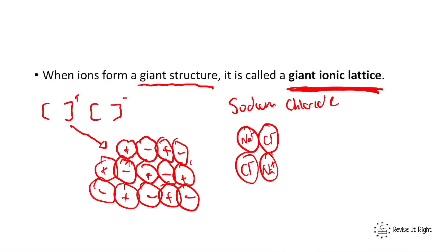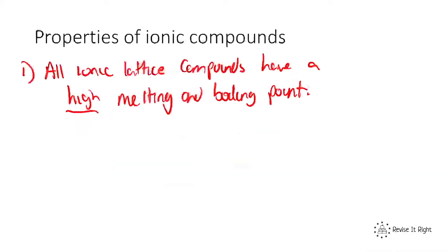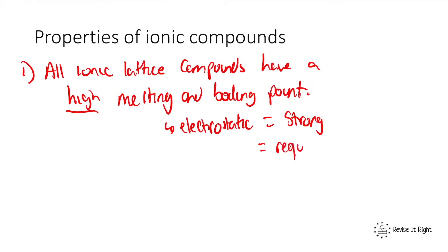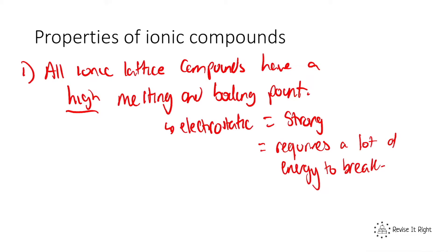Why do they have a high melting and boiling point? Going back to how they're bonded together by electrostatic forces between the positively and negatively charged ions — that electrostatic force is a very strong force. Because it's strong, it requires a lot of energy to break. So if we want to melt our solids, or even turn those liquids into a gas, we need a lot of energy to break those bonds.